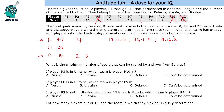We are left needing to make 13 using two players to complete Belarus's 18 total. We can have either 5 plus 8, or we can have 6 plus 7 — so Belarus's last two players are either {5, 8} or {6, 7}.